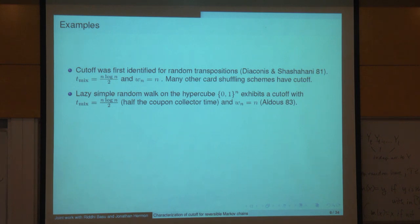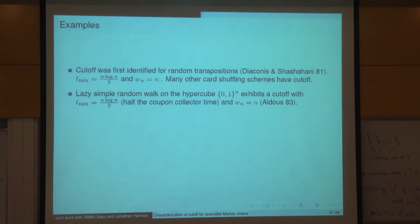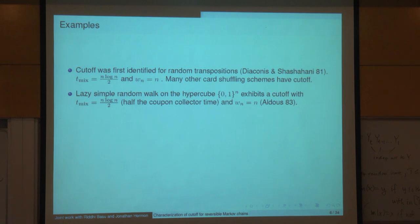In lazy walk on the hypercube, we choose a coordinate and randomize it — meaning we don't necessarily flip it, we just replace it by a random bit. To touch all the bits takes N log N steps, but in the hypercube you don't need to touch all the bits. If you've touched all the coordinates except for root N, you're already reasonably close to mixed. If you've touched all except N^{0.49}, the measure is indistinguishable from uniform.